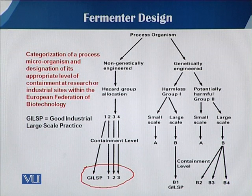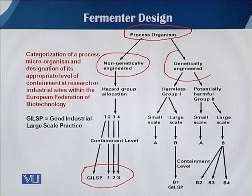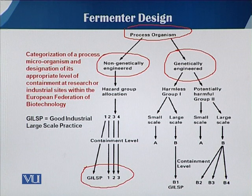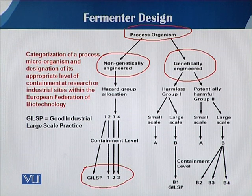For our process organisms, we first have to decide whether the organism is non-genetically engineered or genetically modified (GMO). There is a clear-cut classification into two categories: non-genetically modified and genetically modified. If it is non-genetically engineered and a wild strain, then we assess whether it is a pathogen.